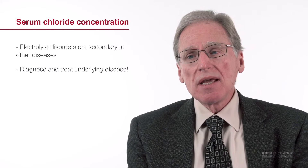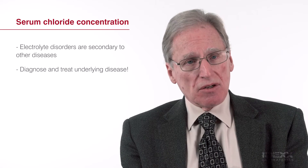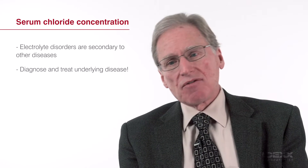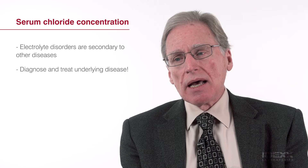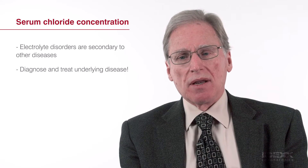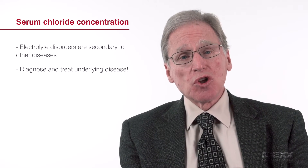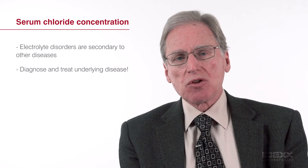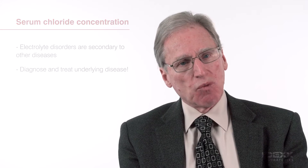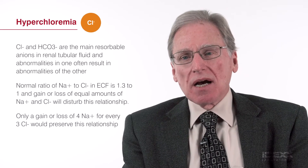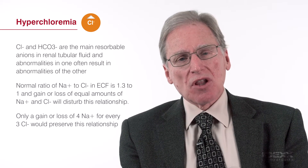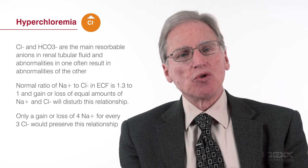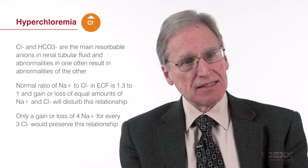Looking at the serum chloride concentration: chloride and bicarbonate are the only important reabsorbable anions in tubular fluid, and abnormalities in one often create abnormalities in the other. The normal ratio of sodium to chloride in extracellular fluid is about 1.3 to 1. Whenever an animal loses or gains equal amounts of sodium and chloride, it will disturb that 1.3 to 1 relationship. Hyperchloremia can be caused by excessive loss of sodium relative to chloride, such as with diarrhea — diarrheal fluids are rich in bicarbonate, so you lose more sodium relative to chloride, leading to hyperchloremia.